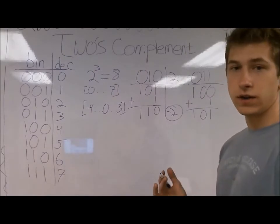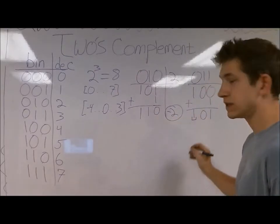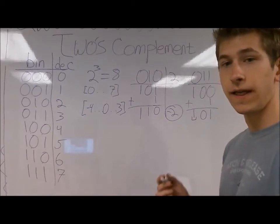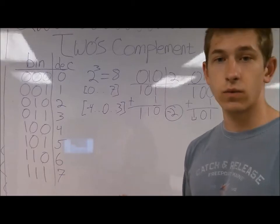Negative numbers in 2's complement start with a 1. The sign bit represents if it's going to be positive or negative. If it's a positive number, it will start with a 0. And if it's a negative number, it's going to start with a 1.